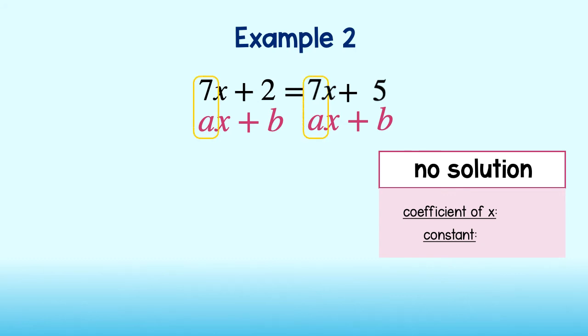Okay, the coefficients of x are the same. They are both 7. And the constants are different. Every time you encounter an equation with these results, you can conclude that the equation has no solution.